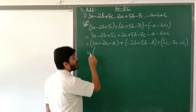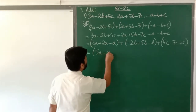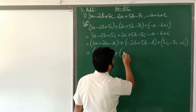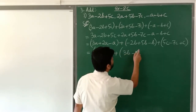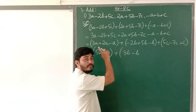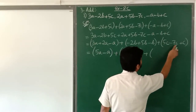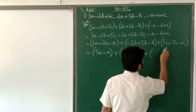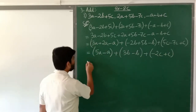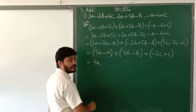Either add or subtract according to their signs. 3a plus 2a is 5a, minus a gives us the a-group. Minus 2b plus 5b is 3b, minus b. For c: 5c minus 7c is minus 2c, plus c. Then 5a minus a is 4a.